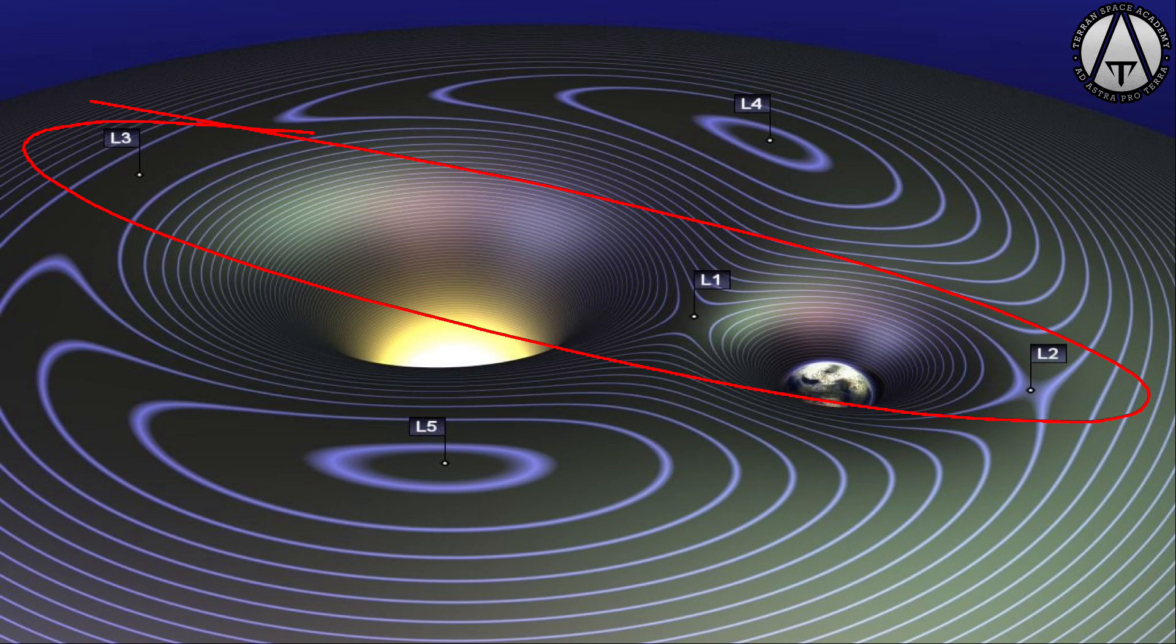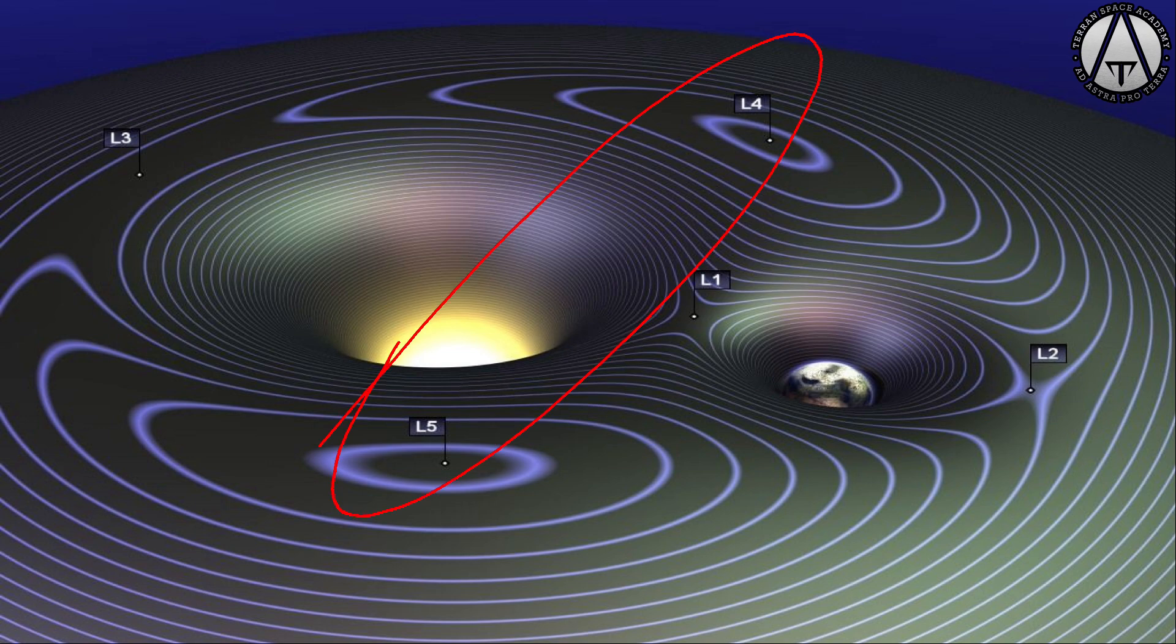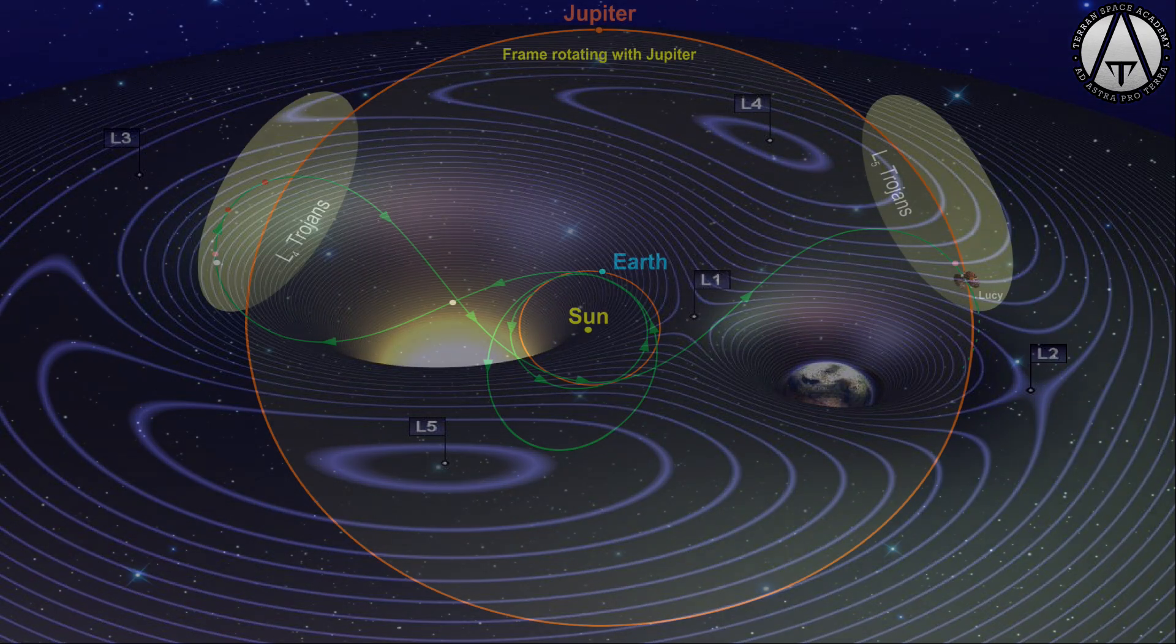Two of them are gravitational valleys: L4 and L5. These are always 60 degrees ahead and 60 degrees behind an orbiting body. Any mass that is stationary in this valley will stay in it and be carried along without having to use any fuel at all. There are asteroids trapped in these valleys in the orbit of Jupiter and even the Earth. These are called Trojan asteroids.